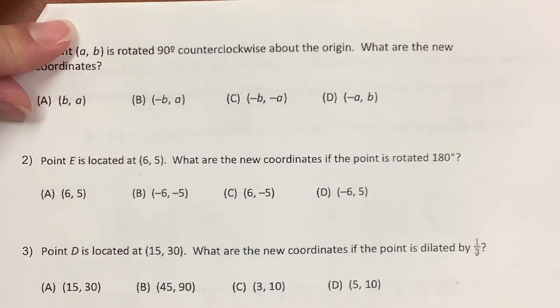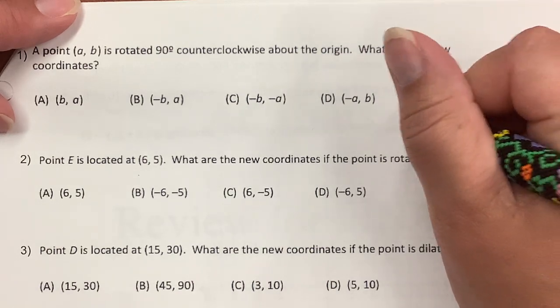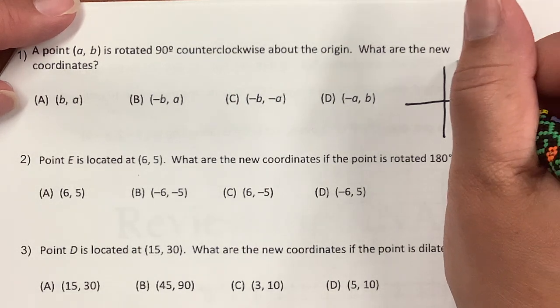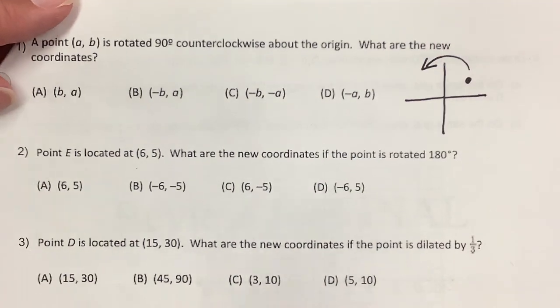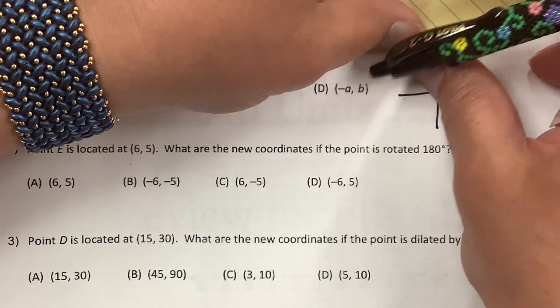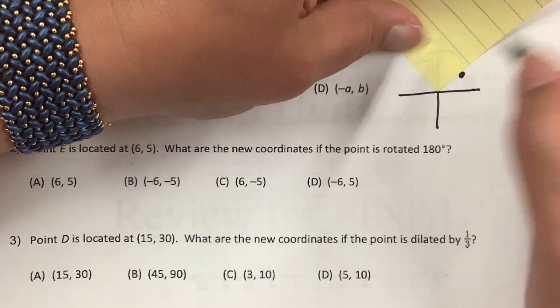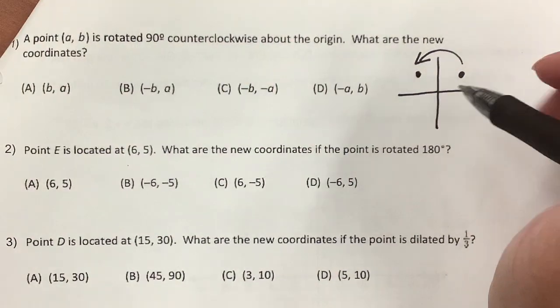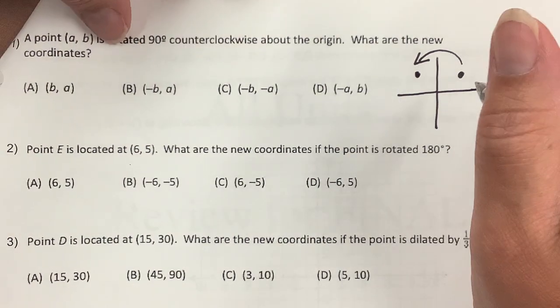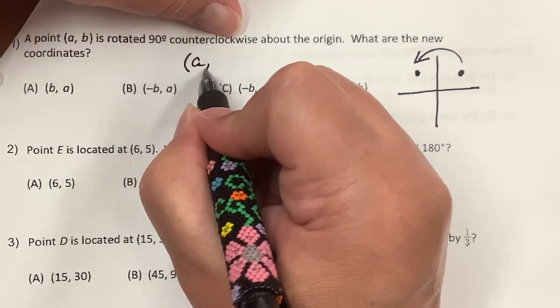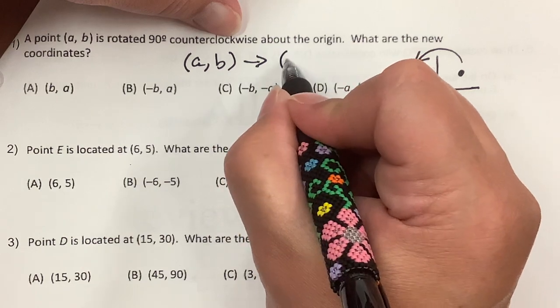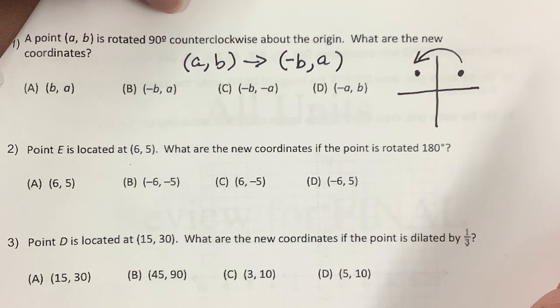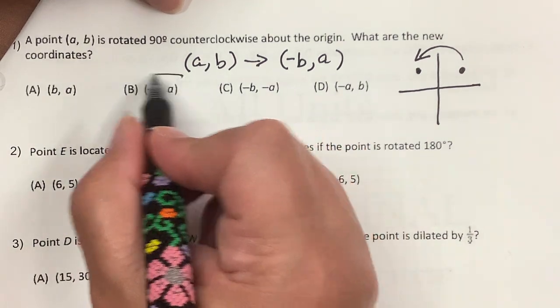A point AB is rotated 90 degrees counterclockwise. Let's draw a little picture - AB is here, and counterclockwise is the direction opposite a clock. A right angle is 90 degrees, so it would be over here. You remember, we have AB, usually I use XY. You switch and negate the Y. This is A and B, you switch and negate the B. That is B.